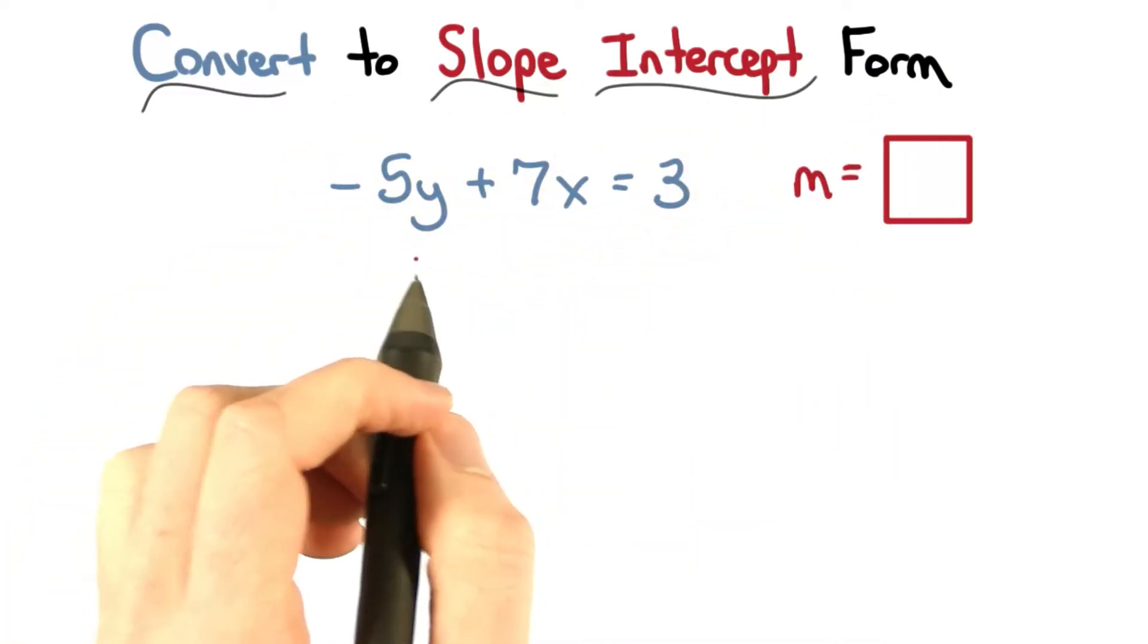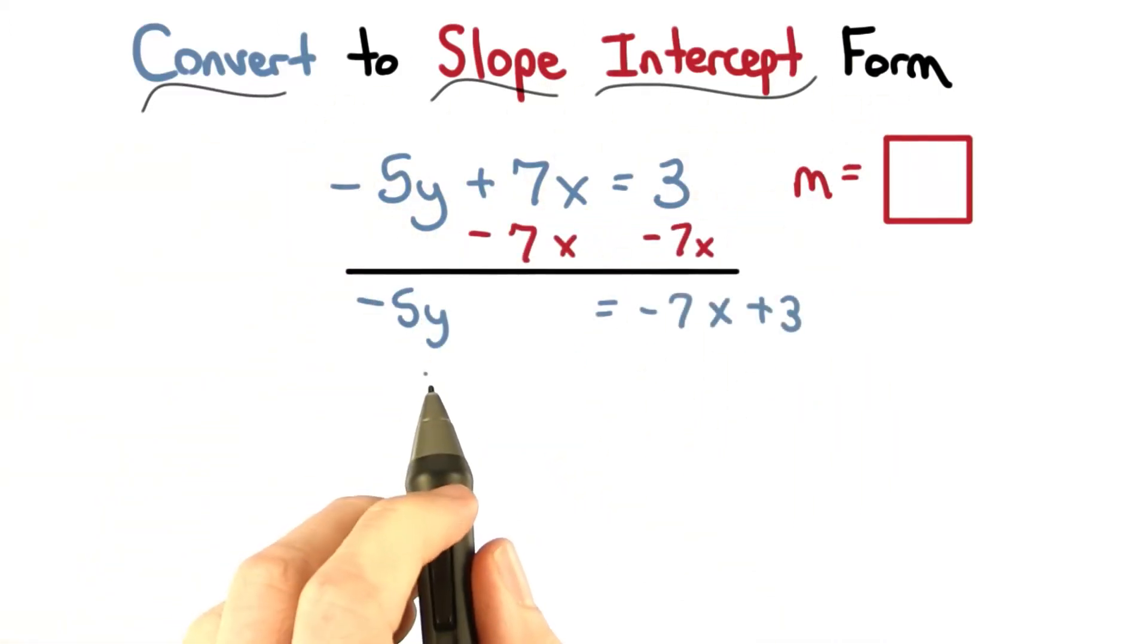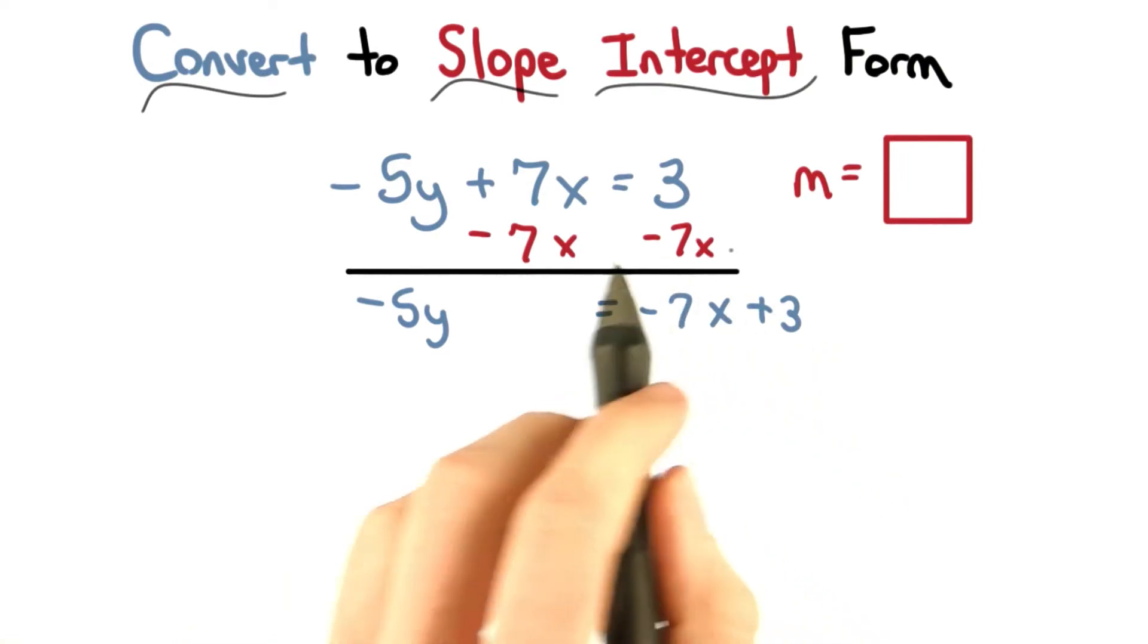Well, we can convert to slope intercept form and do it that way. I've had negative 5y on the left and negative 7x plus 3 on the right.